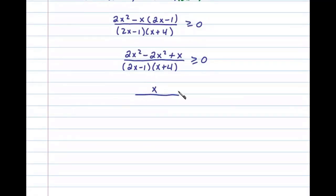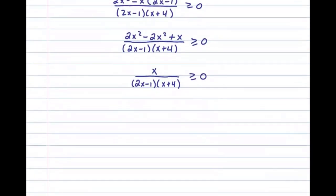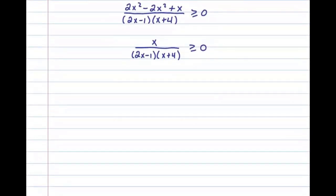We're left with the simplified algebraic fraction x over (2x minus 1)(x plus 4), which is greater than or equal to 0. At this point we're ready to solve this by using a sign chart.